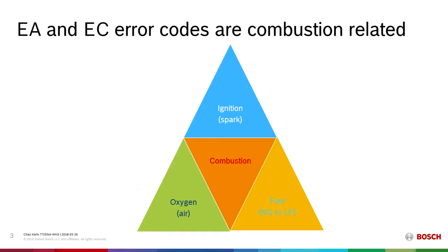But first and foremost, since EA and EC are both related to the combustion triangle, let's refresh our memory on what that includes. The combustion triangle includes fuel — either natural gas or propane. With that fuel, you must also have oxygen, arriving with the air into the combustion chamber via the combustion fan. And then a heat source, ignition — provided here by a spark igniter. All three elements are required to achieve and maintain combustion. If any one of those components fail, combustion will fail.